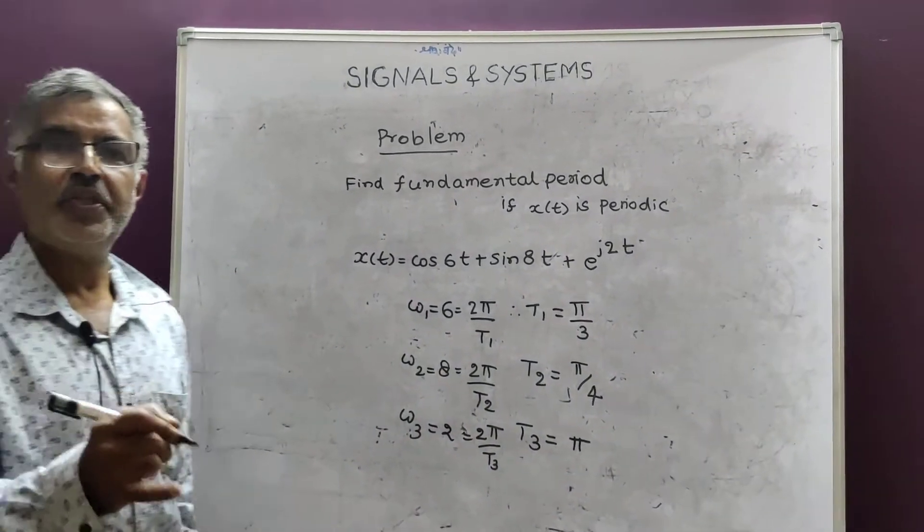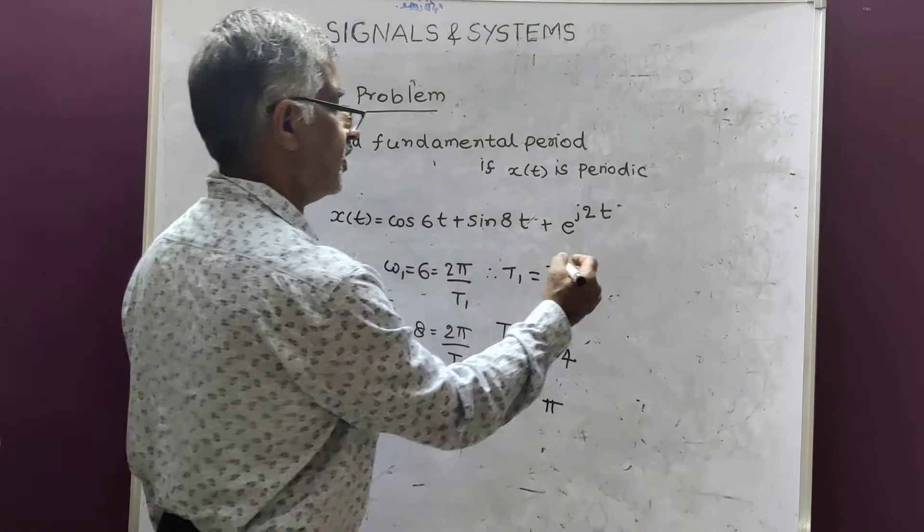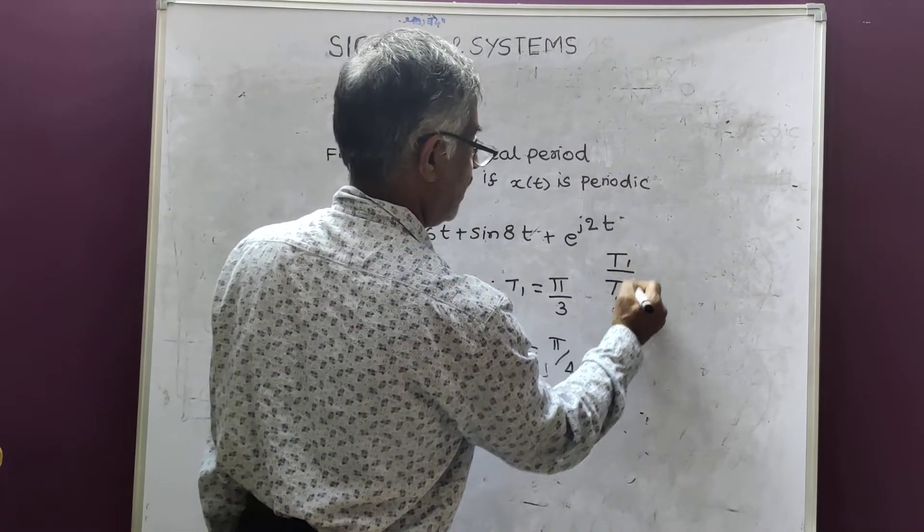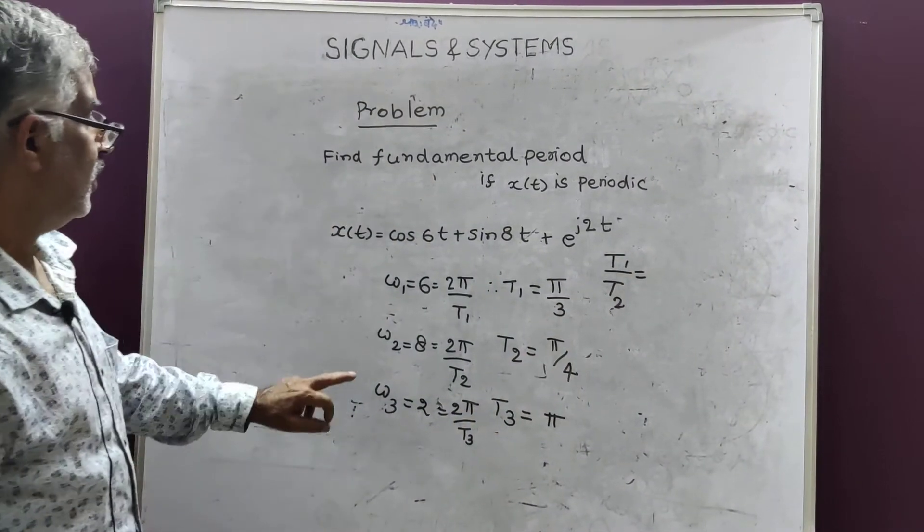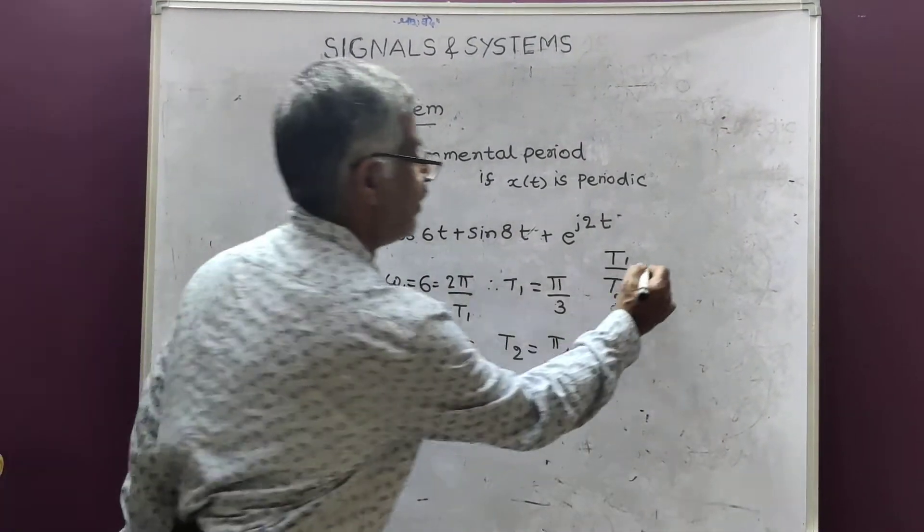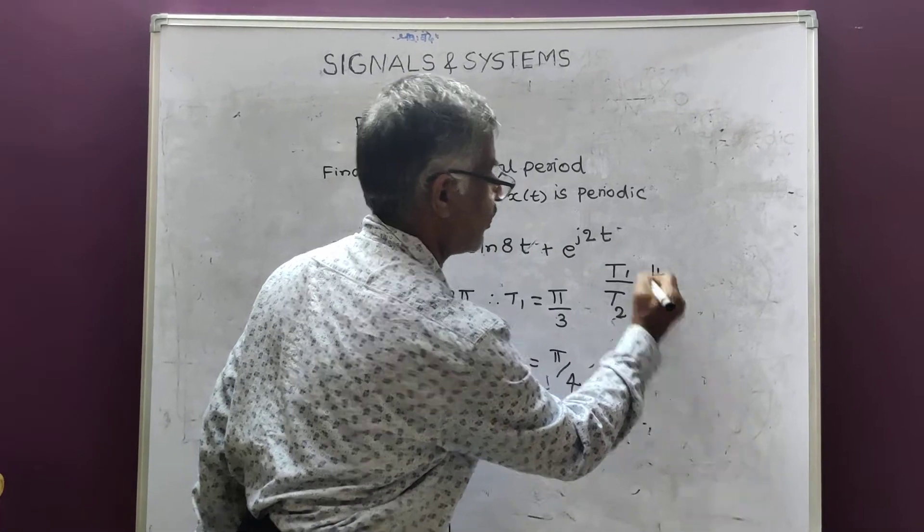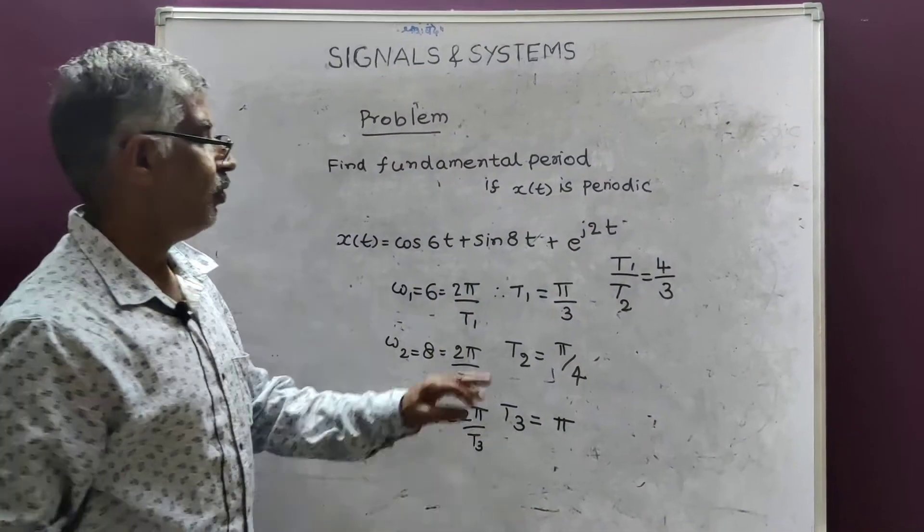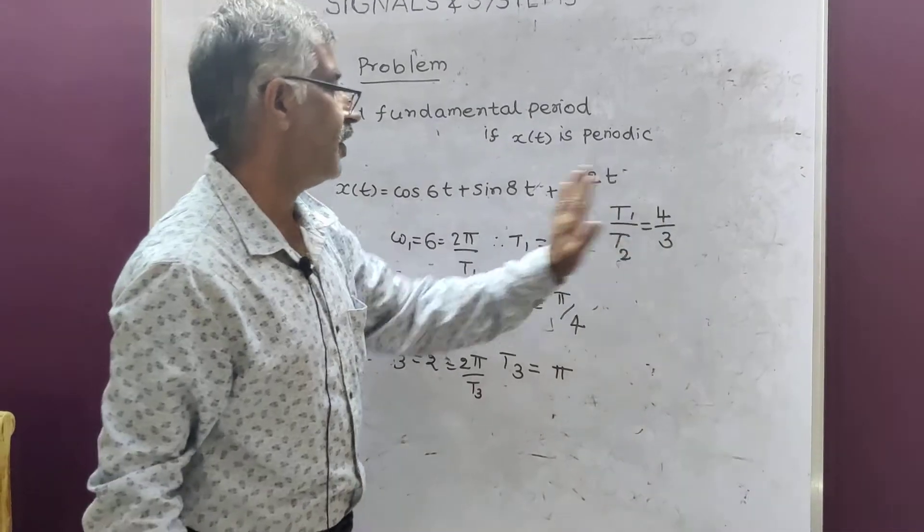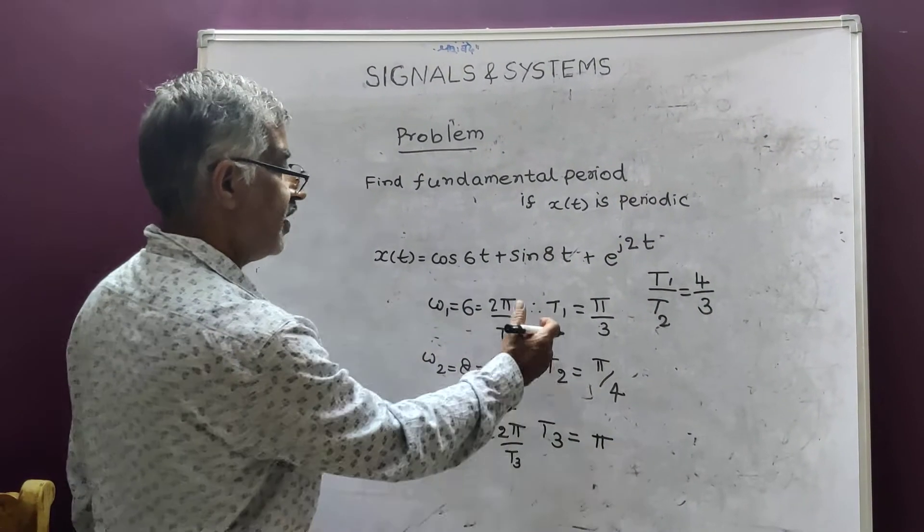Now, as usual again, you consider these ratios. t1 by t2. What is t1 by t2? If you take t1 by t2, π get cancelled. We get 4 by 3. So, 4 by 3, rational number. So, one condition is satisfied.